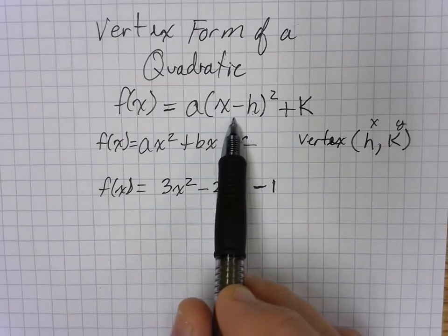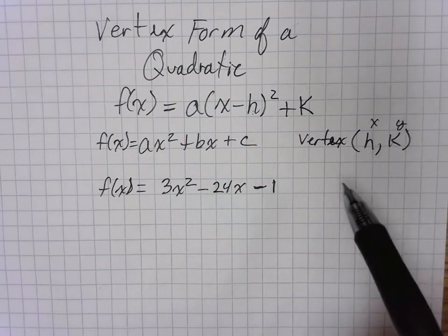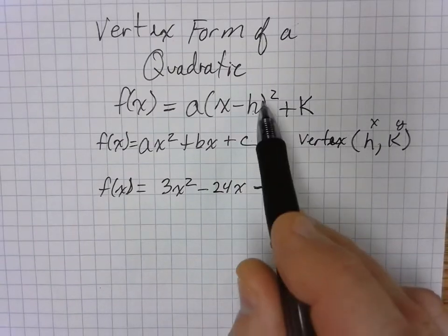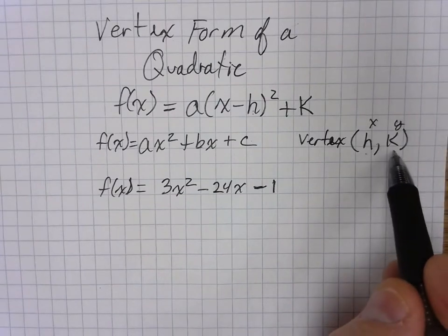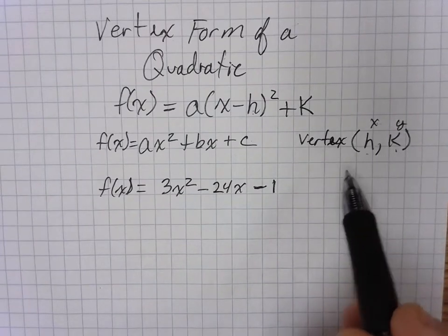One of the biggest reasons we want to use this is so we can actually find the vertex or locate the vertex. The vertex is located in this form at h, k. That's the x and y coordinates of the vertex.